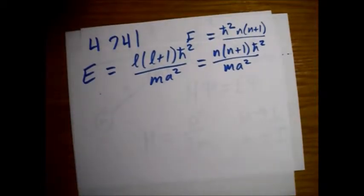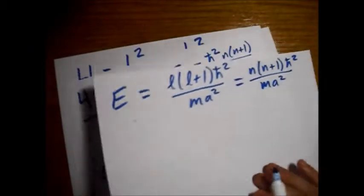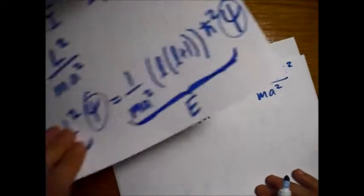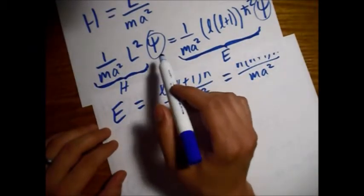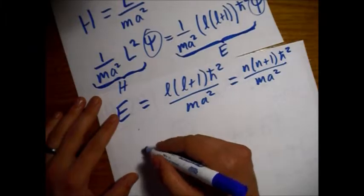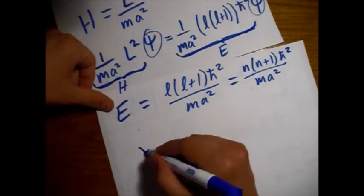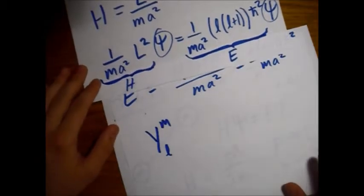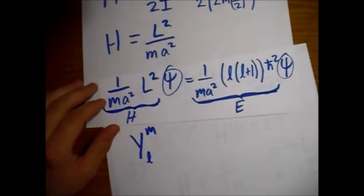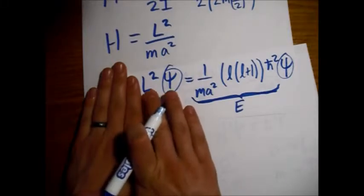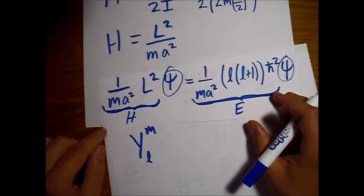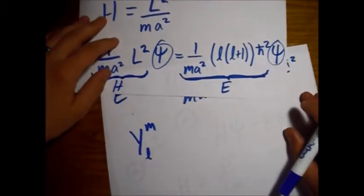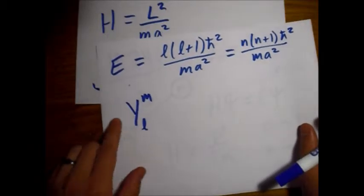All right. So what are the normalized eigenfunctions for the system? What is the degeneracy of the Nth energy level? Well, we know what the eigenfunctions for L squared are. It's just the spherical harmonics. And these are already normalized.